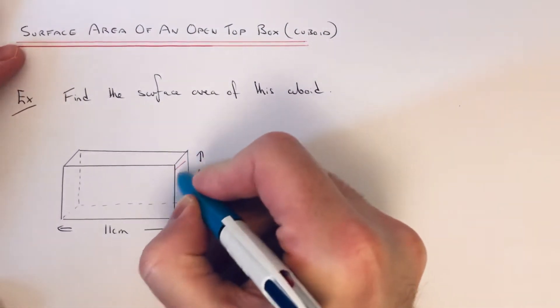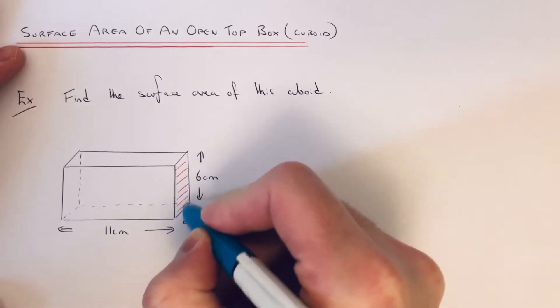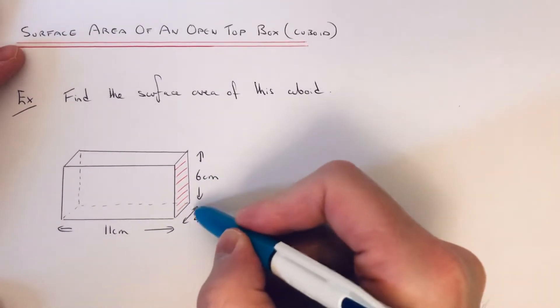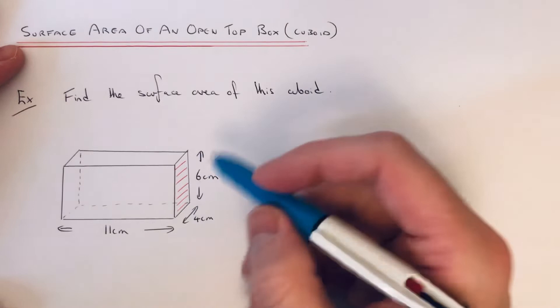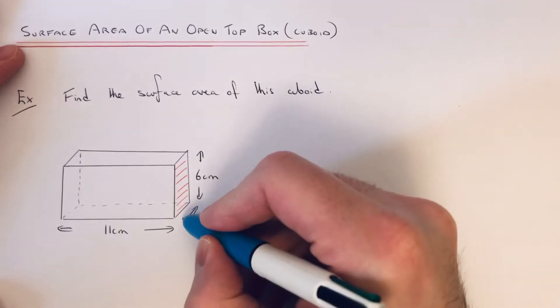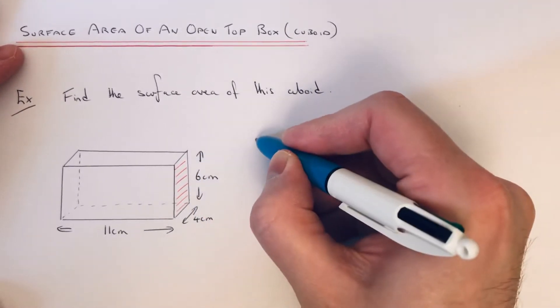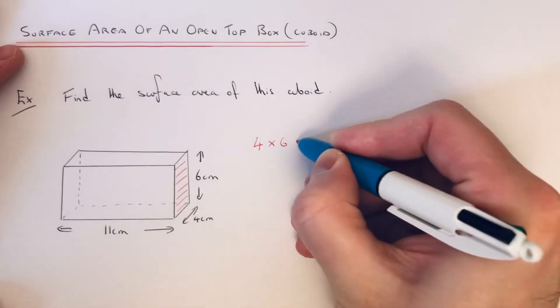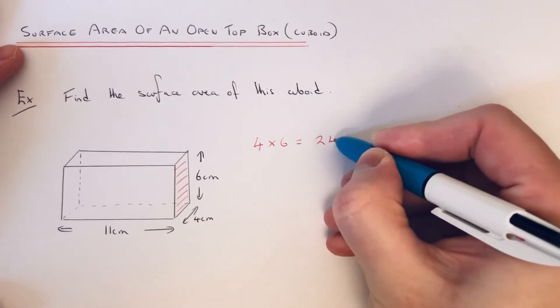So let's start off with the face here. This is a rectangle which is 4 by 6. So to find the area of a rectangle, you multiply the length by the width. So 4 times 6 is 24.